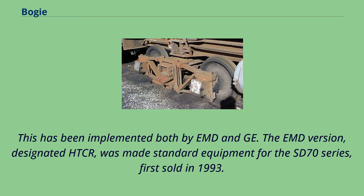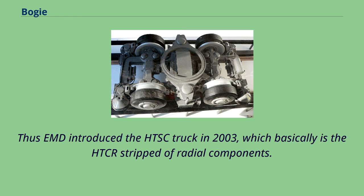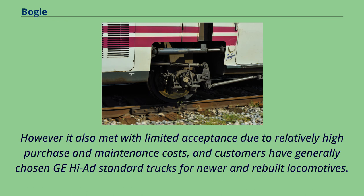Radial steering has been implemented by both EMD and GE. The EMD version, designated HTCR, was made standard equipment for the SD70 series, first sold in 1993. However, the HTCR in actual operation had mixed results and relatively high purchase and maintenance costs, so EMD introduced the HTSC truck in 2003, which is essentially the HTCR stripped of radial components. GE introduced their version in 1995 as a buyer option for the AC4400CW and later Evolution series locomotives, but it also met with limited acceptance due to high costs, and customers have generally chosen GE's standard trucks for newer and rebuilt locomotives.